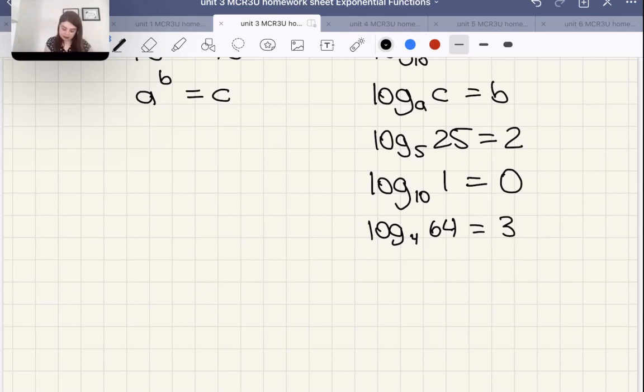So we can relate these pretty easily to very simple things we know. If you were asked 5 to the power of x is 25, you'd say of course, x is 2, right? It would be very quick. Whereas sometimes the logarithms at first throw people off a little bit, but it really is just the same thing as exponents when it comes down to it. All of these can be written out in exponent form very easily.